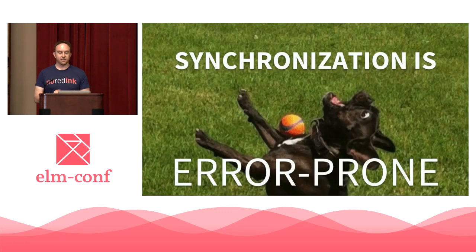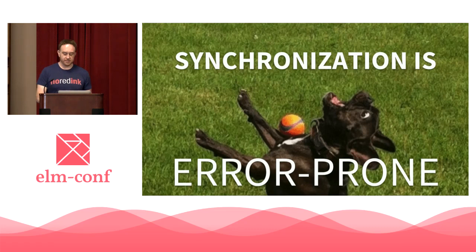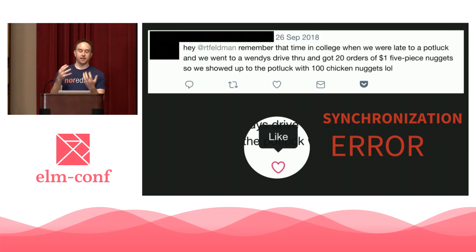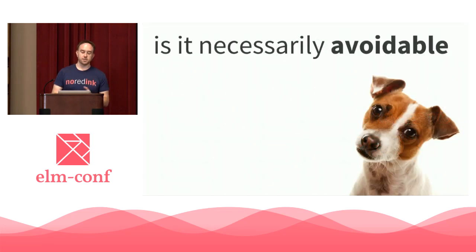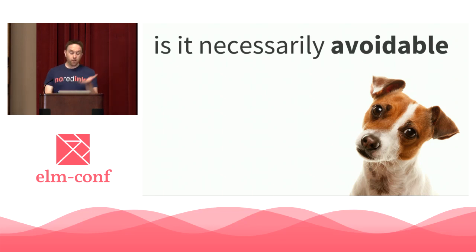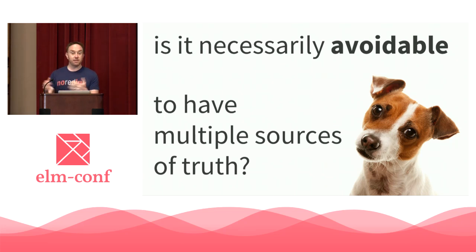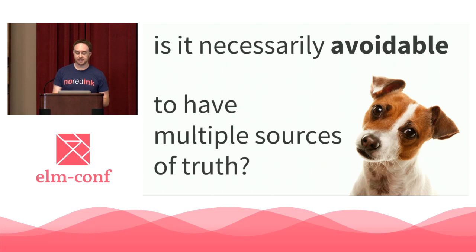Synchronization is error-prone, as we saw. These things can happen all the time when you have to synchronize two pieces of information because there are multiple sources of truth. Which begs the question: is it necessarily avoidable to have multiple sources of truth? Do we sometimes have to have them even if we'd prefer a single source?